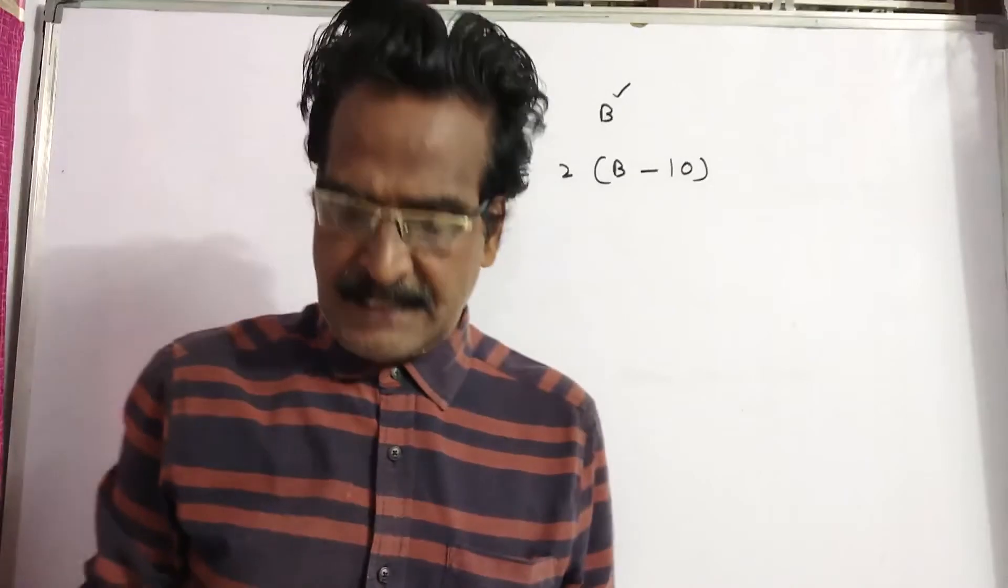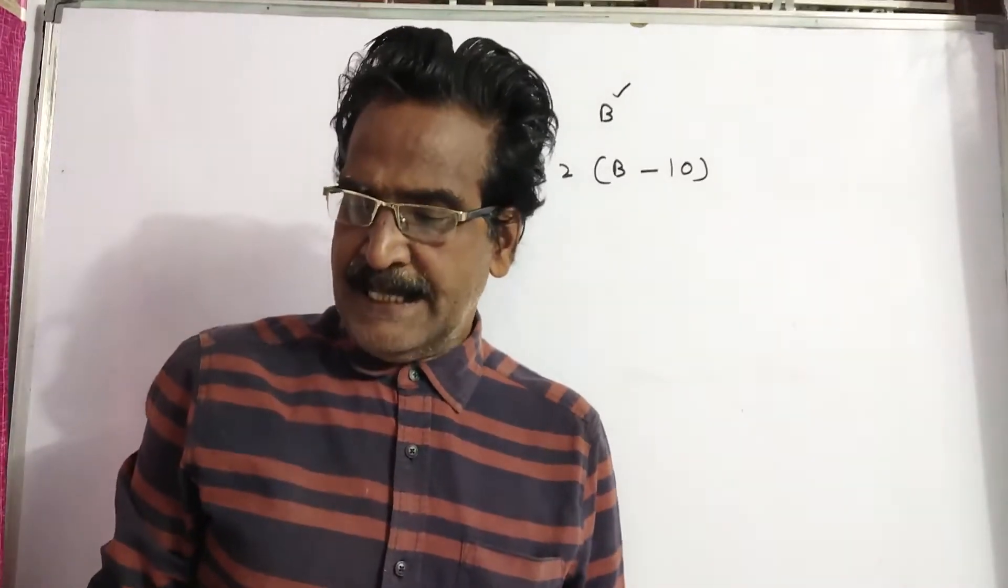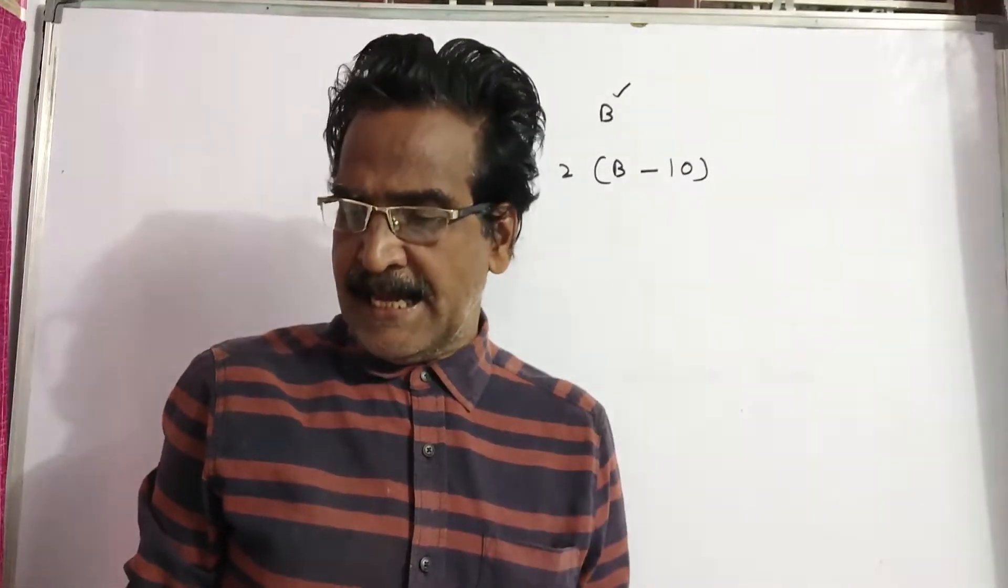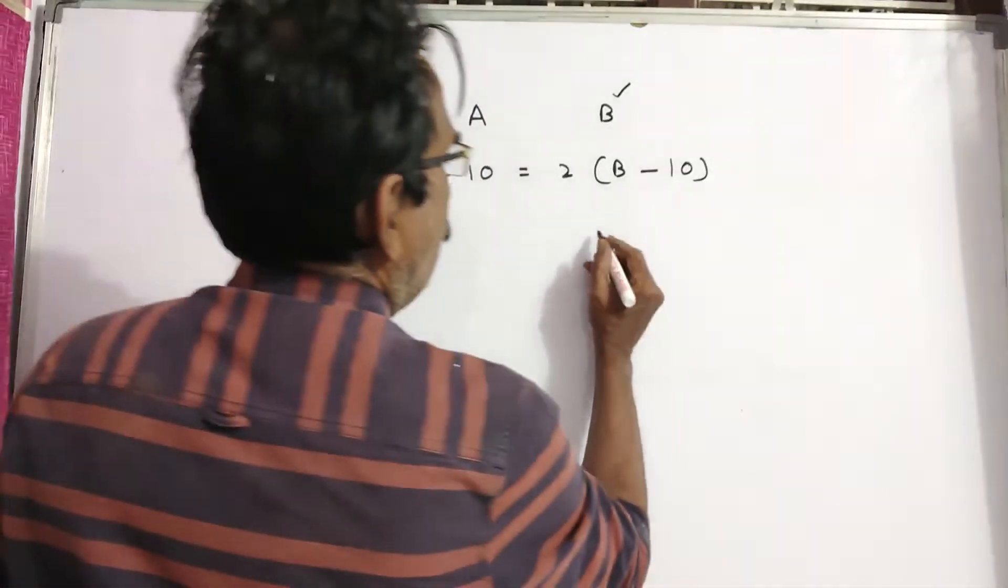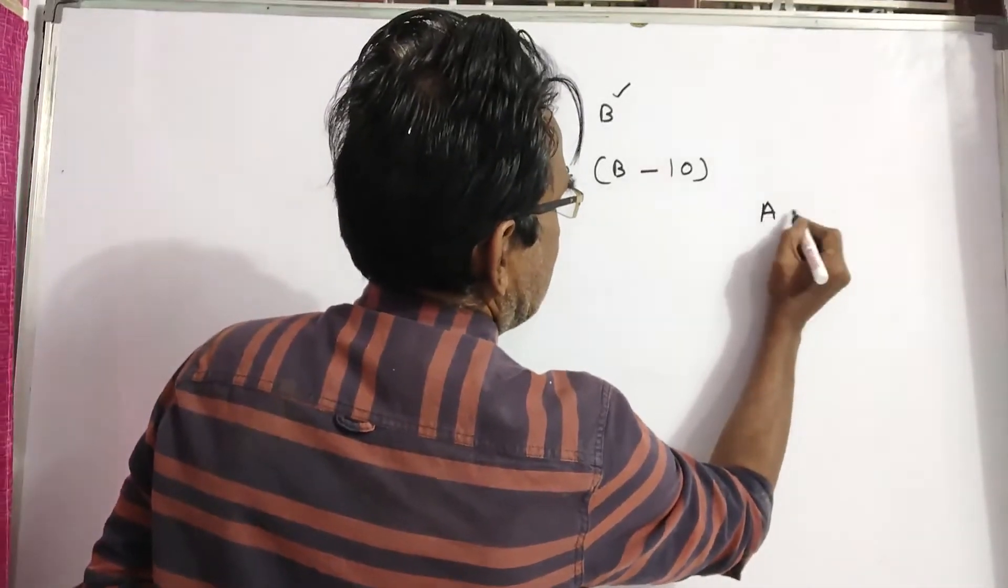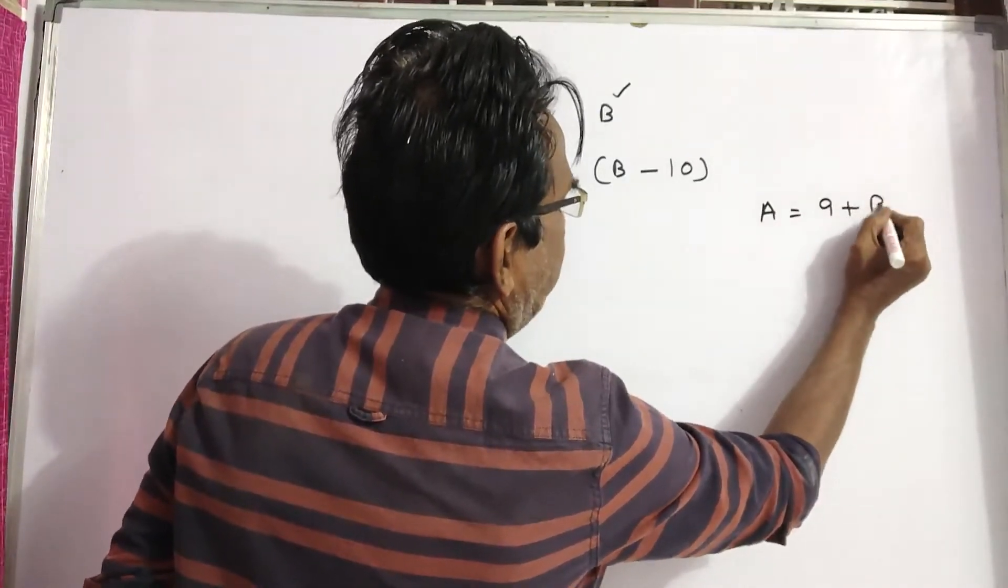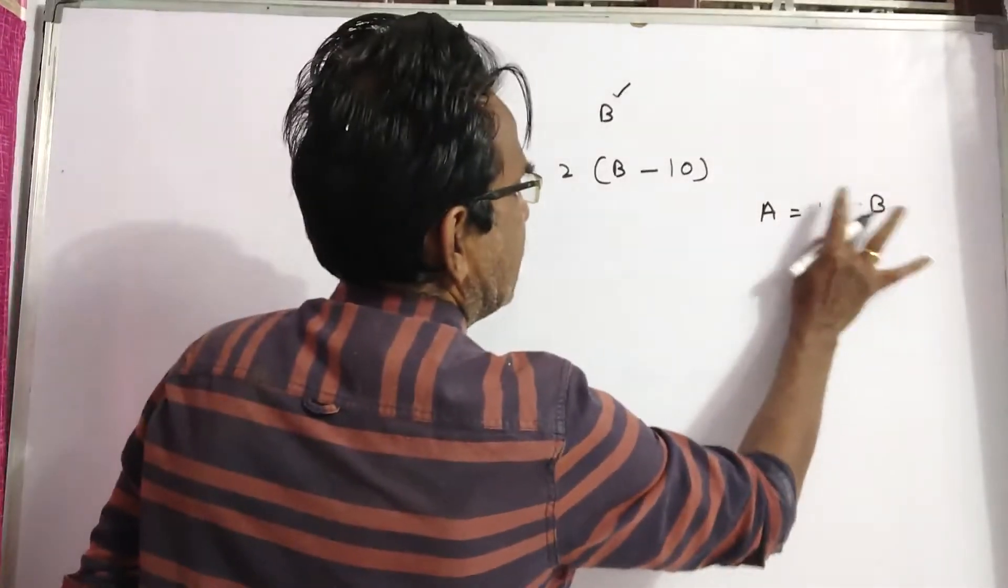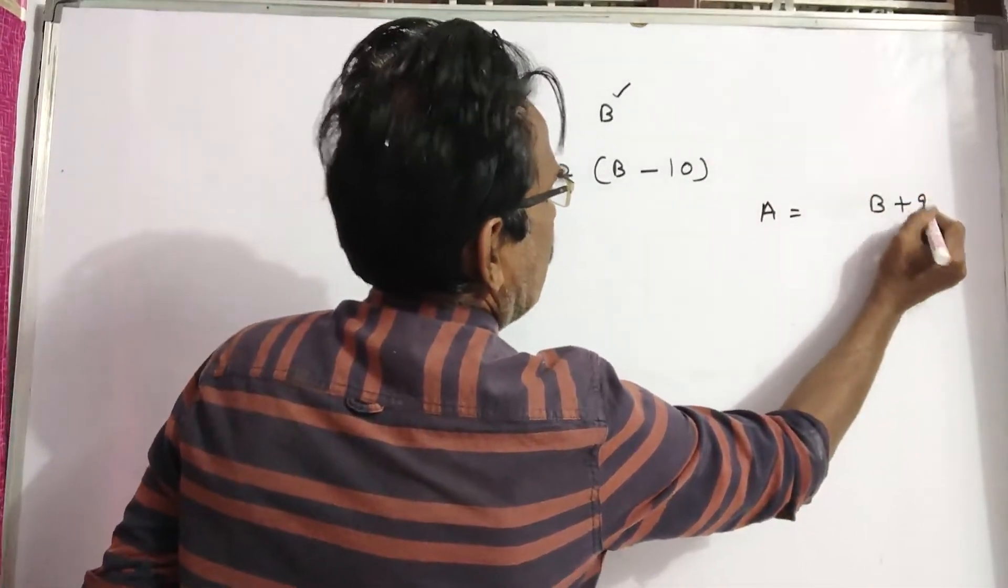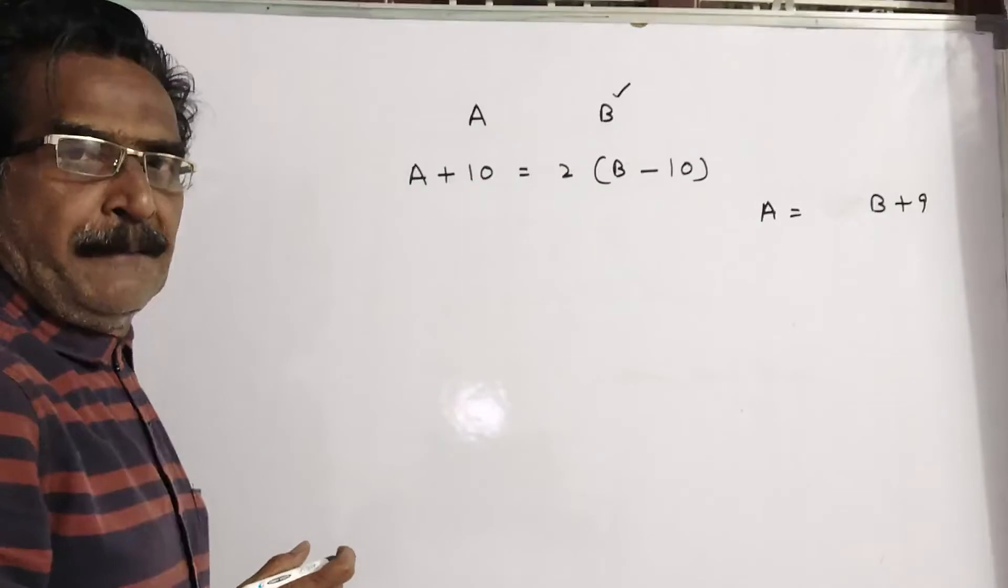This is the first equation. And the second equation: if A is now 9 years older than B, now A is 9 years older than B, or B plus 9. So A is equal to B plus 9.